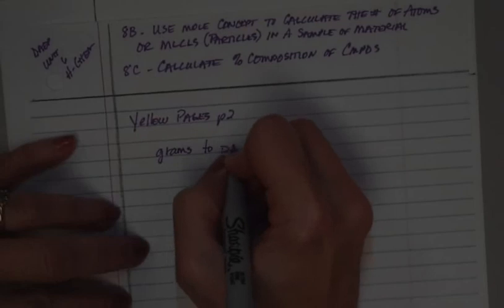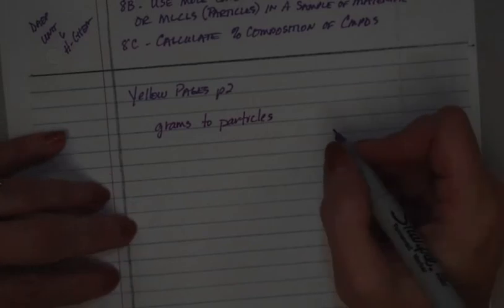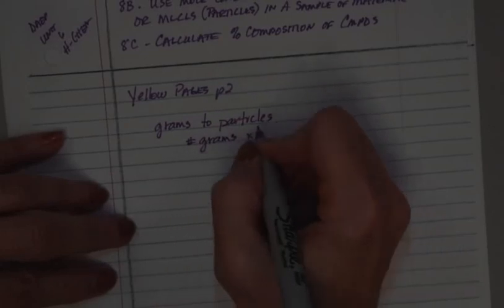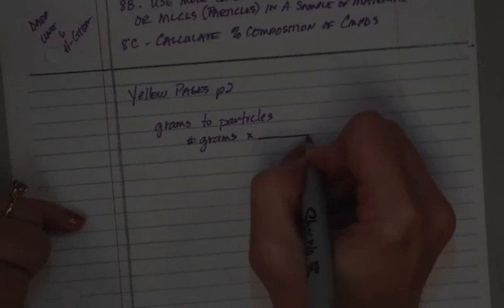If I want to know I've got 10 grams of something, how many atoms is in there? So, what you do is you write down what's given to you in the problem. In this case, they're going to give you the number of grams. And then you're going to multiply it by a conversion factor. And by the way, this is what dimensional analysis is.